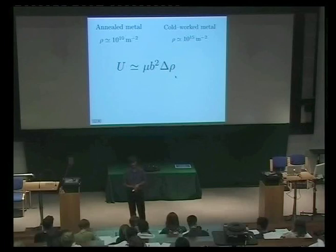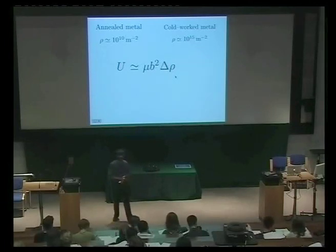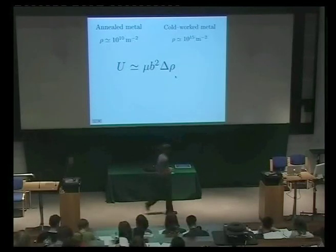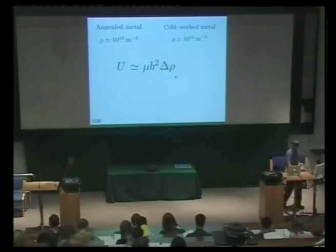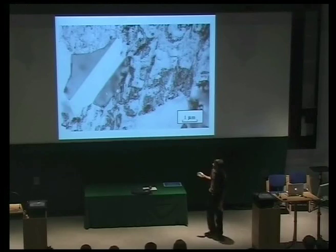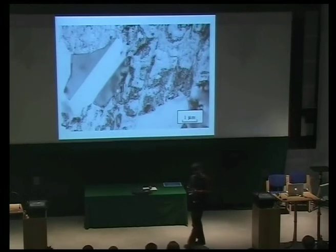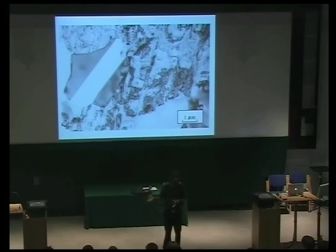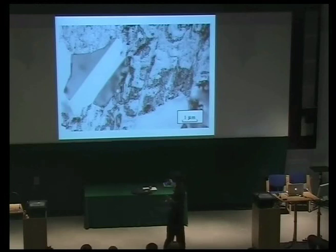What we'll do in the next lecture is see how much of that energy actually gets stored inside the material, how much is dissipated as heat, and look at the consequences. That process is known as recrystallization. This is the deformed structure, and you can see this beautiful grain which hardly has any dislocations — it's growing and consuming the deformed material. The driving force for this recrystallization process is the stored energy of the cold work.